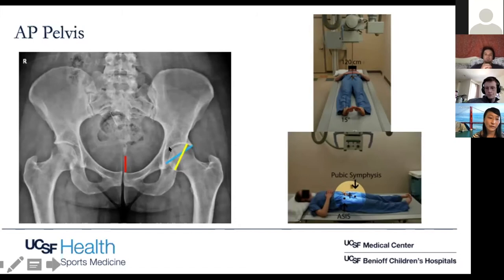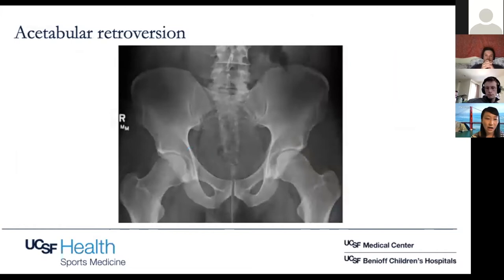This patient has a positive crossover sign because the anterior and posterior walls are crisscrossing, which is a sign of acetabular retroversion. Normally your acetabulum faces slightly forward. You can also look for an ischial spine sign — where the ischial spine is visible within the inner ring of the pelvis — which is another sign of acetabular retroversion.